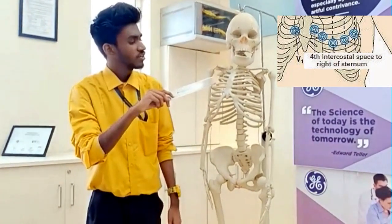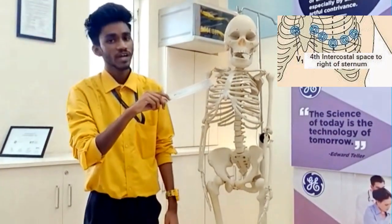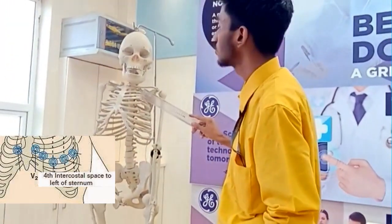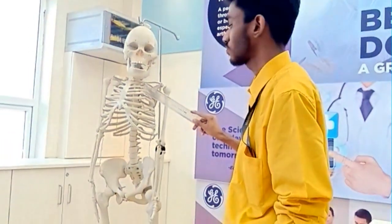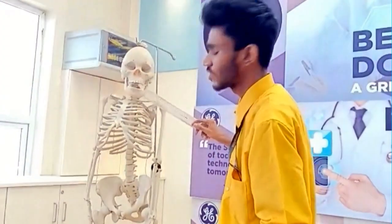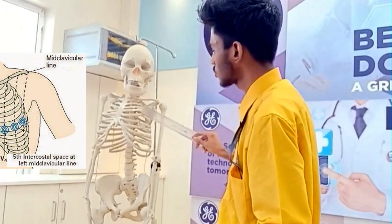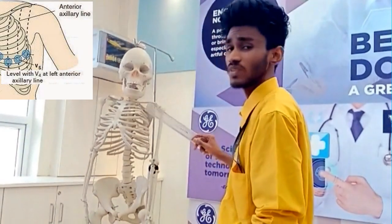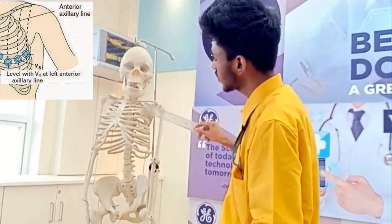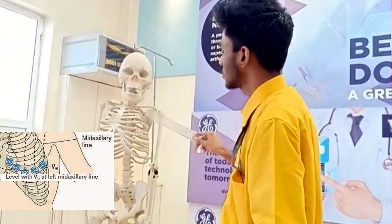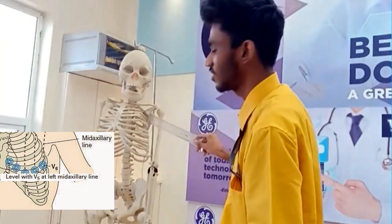V1: fourth intercostal space to the right of the sternum. V2: fourth intercostal space to the left of the sternum. V3: between V2 and V4. V4: fifth intercostal space at the mid-clavicular line. V5: same level as V4 but at the anterior axillary line. V6: same level as V4 but at the mid-axillary line.